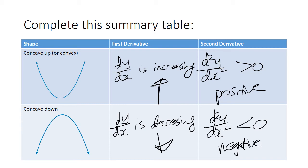This summary table is very important. I want you to get this down in your book — put a star next to it. Because a lot of the work for the next few lessons will be based on these relationships. Make sure you understand this properly; if not, watch this part again. I need you to really understand the relationship between the first derivative, second derivative, and how it relates to the shape of the graphs.